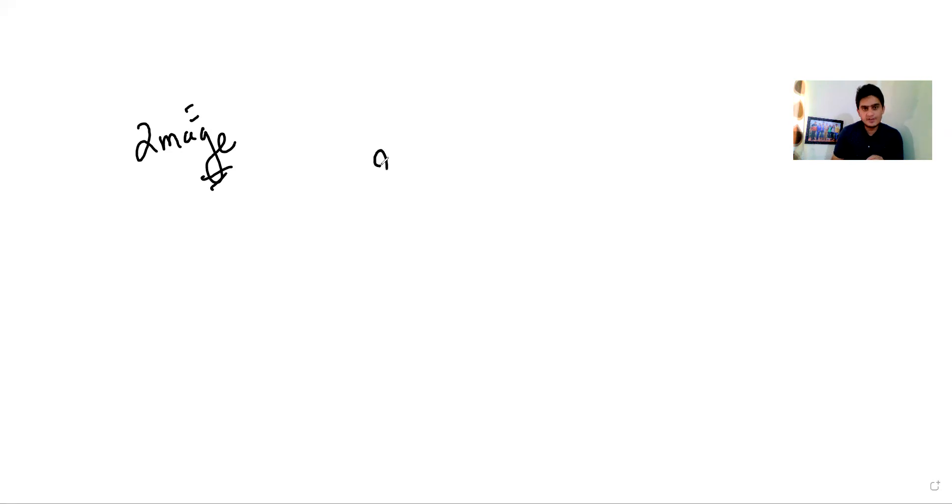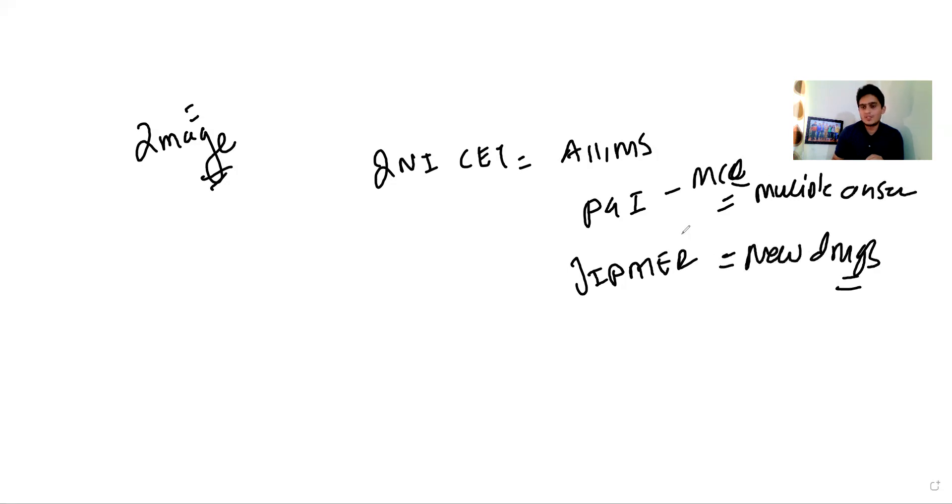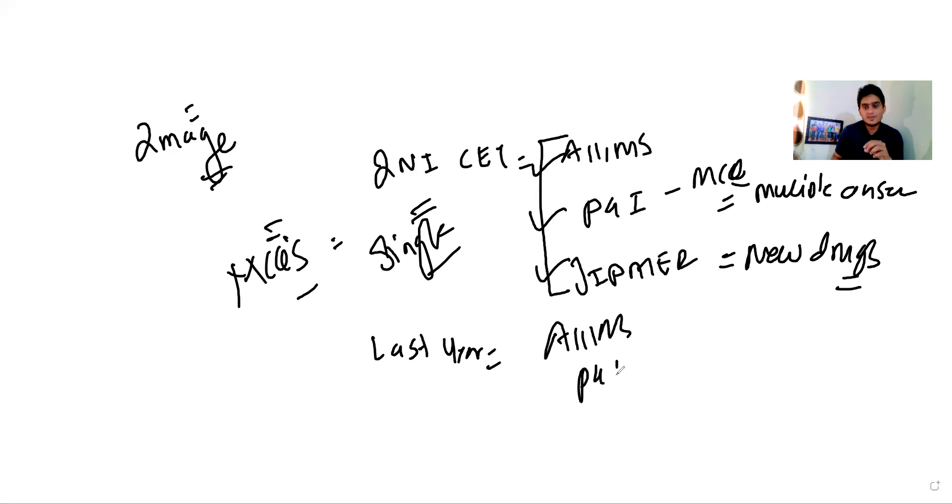Then one more point I want to add that is different for INI CET, that INI CET is not only about AIIMS, it's also about PGI and JIPMER. So what PGI used to do, the PGI used to have multiple options correct. The MCQs were multiple answers. JIPMER was always about new drugs. They used to ask you a lot of new drugs and new advances. And also in PGI they used to give assertion and reasoning. So now INI CET is about all. So they're taking everything from all. So if you solve only MCQ banks, see what I have noticed is that apps which give you MCQ banks, usually they have only single based answers. Not all apps and modules and question banks cater this purpose of INI CET of knowing the multiple answers and match the following.